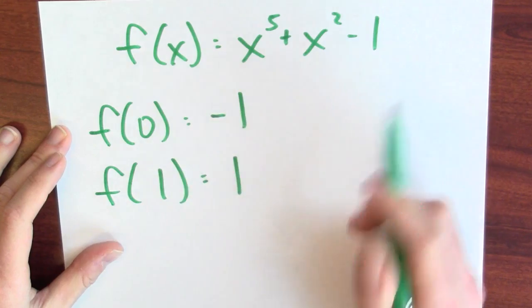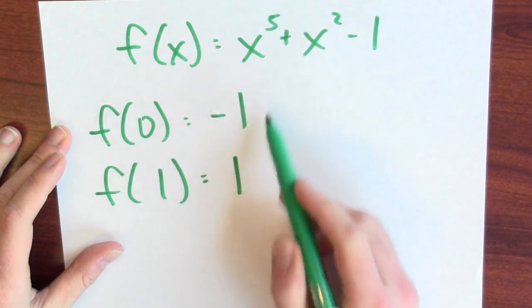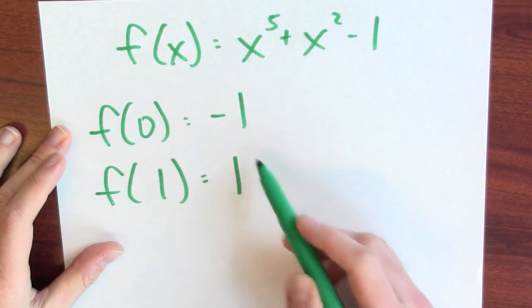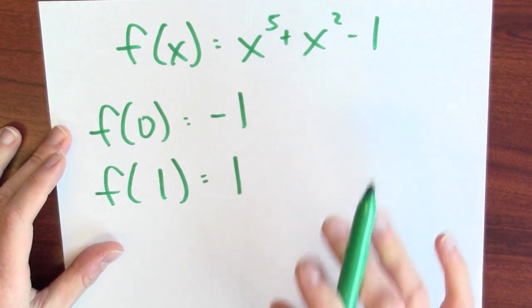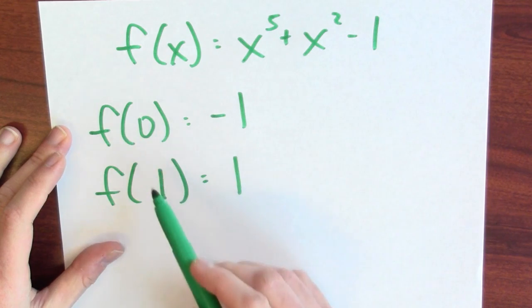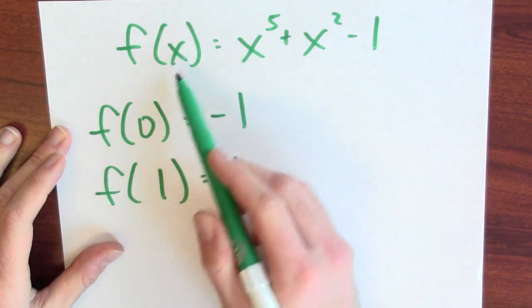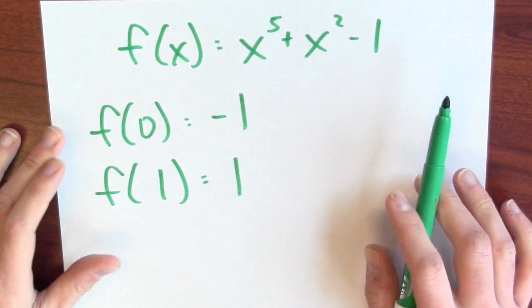So what I know here is I've got a continuous function, and its value at 0 is minus 1, and its value at 1 is 1. So there has to be some input between 0 and 1 where this function's output is equal to 0. So I know there's a root there between 0 and 1. Let's find that root.